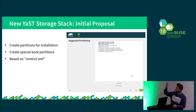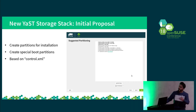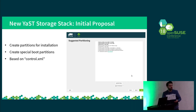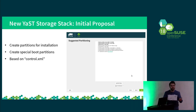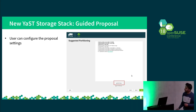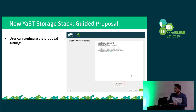When we arrive at this dialogue for the first time, the system automatically creates an initial proposal based on all the information in the control file. But in case you don't like this initial proposal — for example, the proposal might remove partitions you don't want to touch, or you don't want a separate home partition — if you want to change these things, the user can do it using the guided setup button. When we use this button, the guided setup will go through a sequence of dialogues where we can configure several options, and then the system will create a new proposal according to the selected options.